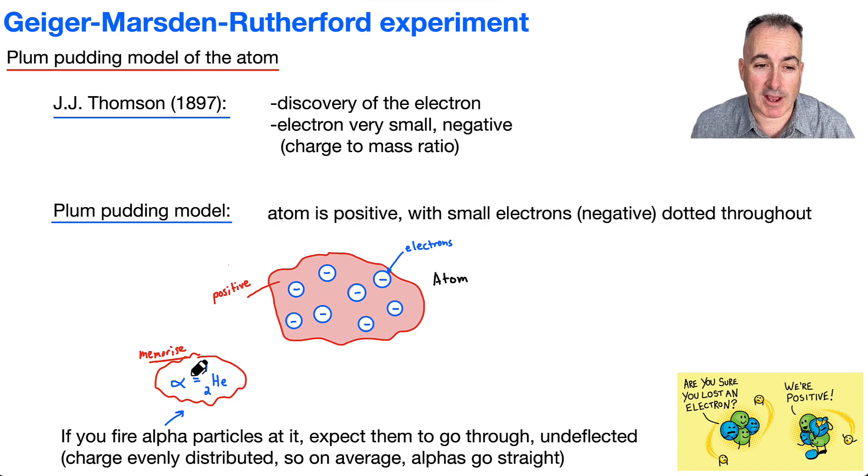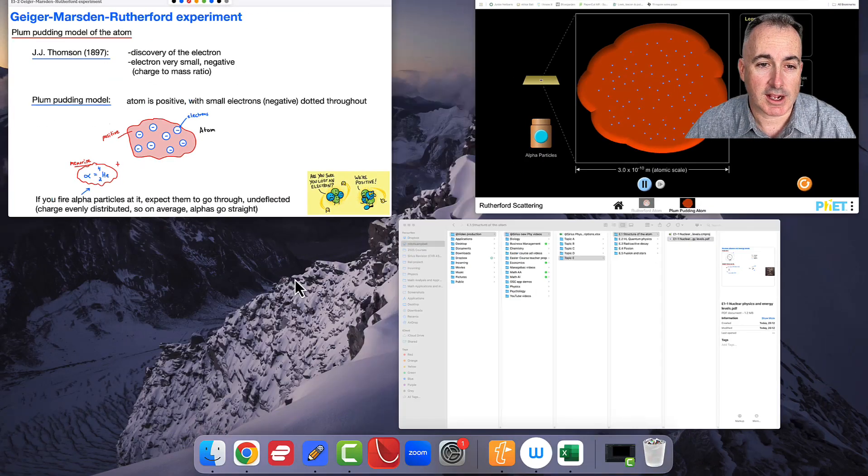If you fire these particles at it—and by the way, an alpha particle is positive—if this whole thing is evenly distributed, things might deviate left or right, but they're going to mostly just go straight. Scientists figured that should be the case. Let's see what it looks like.